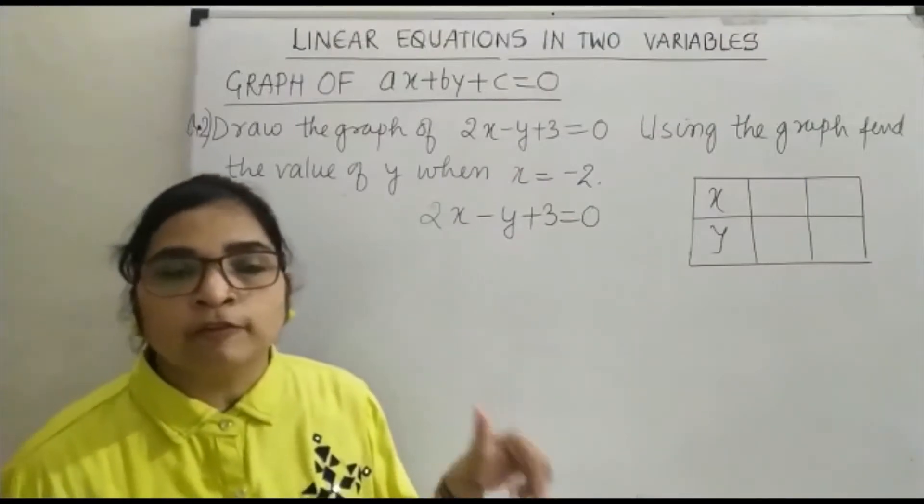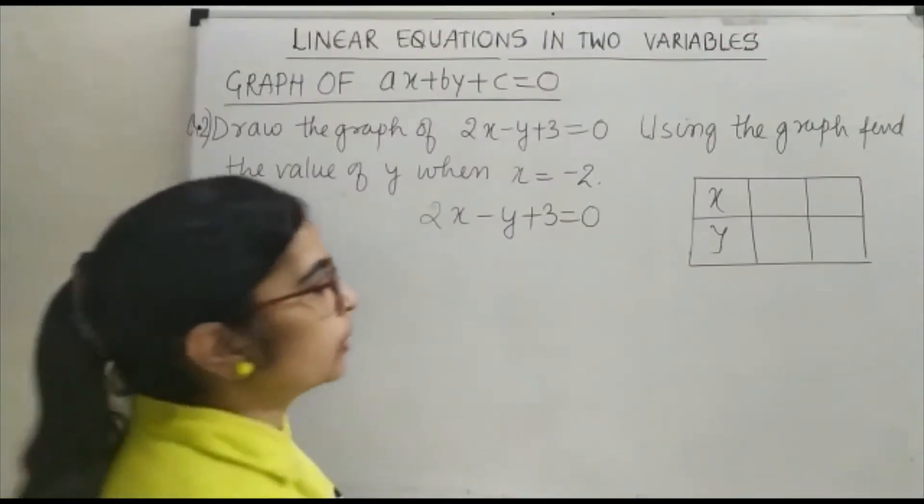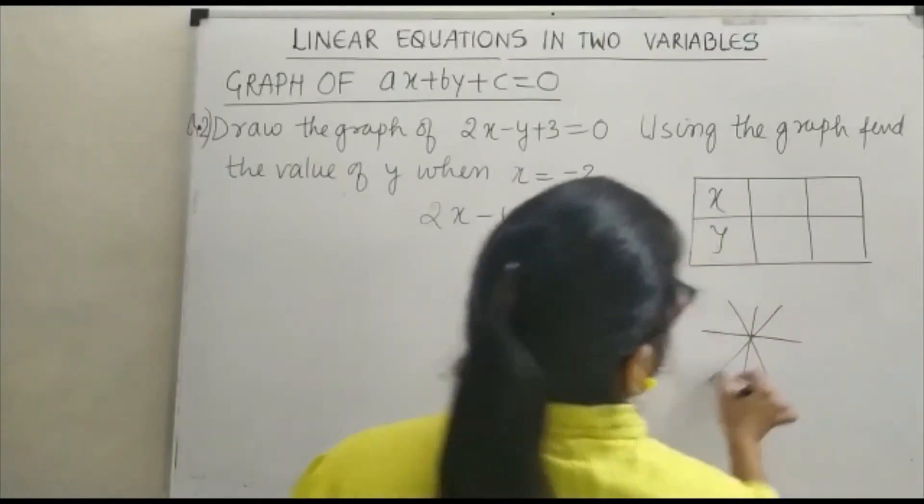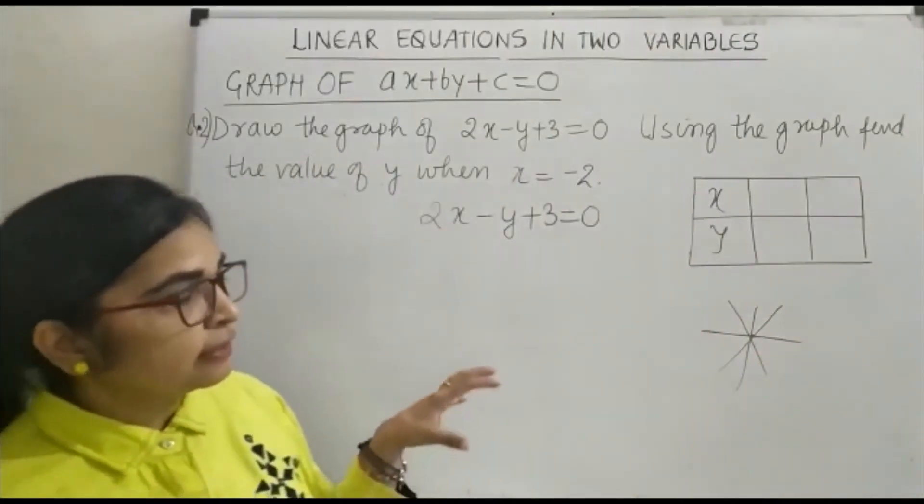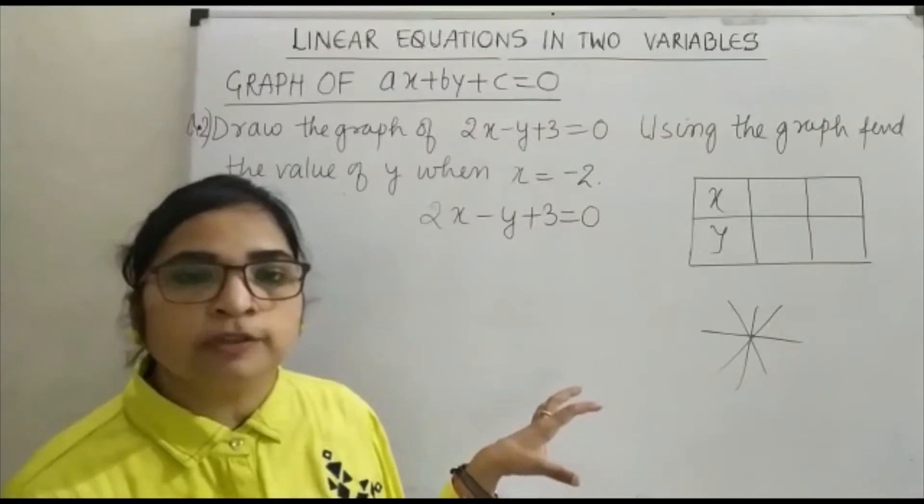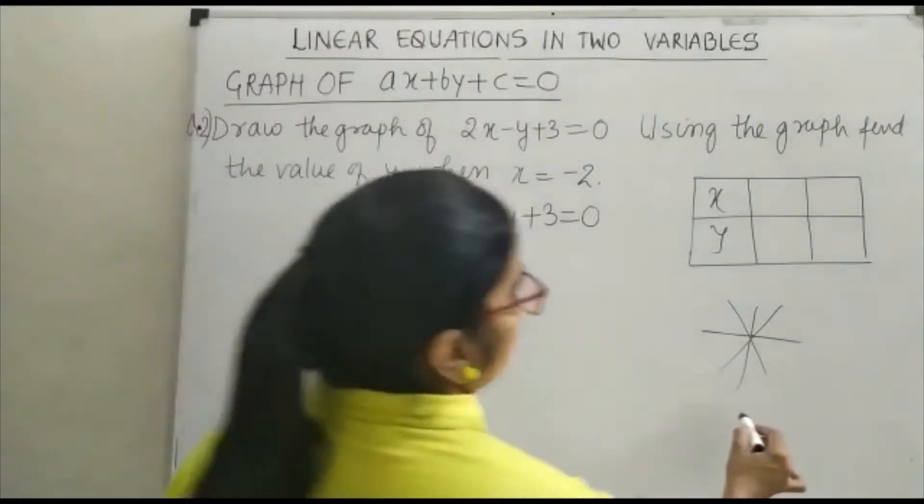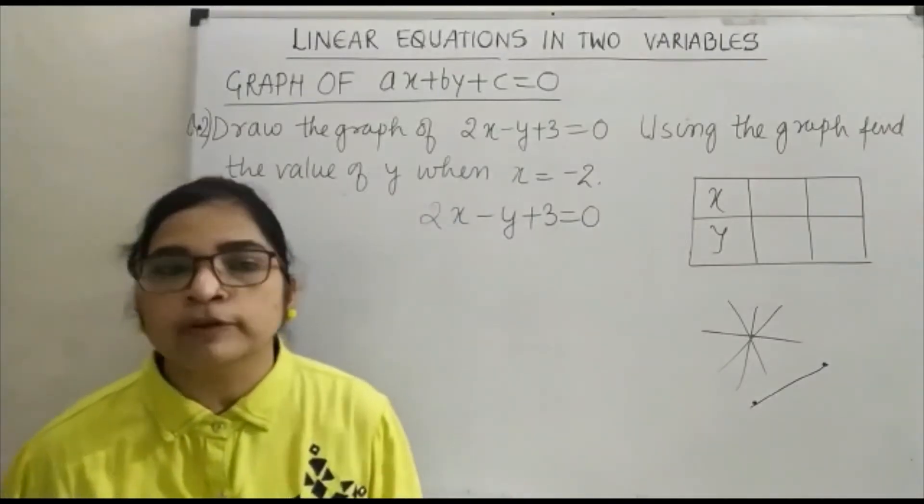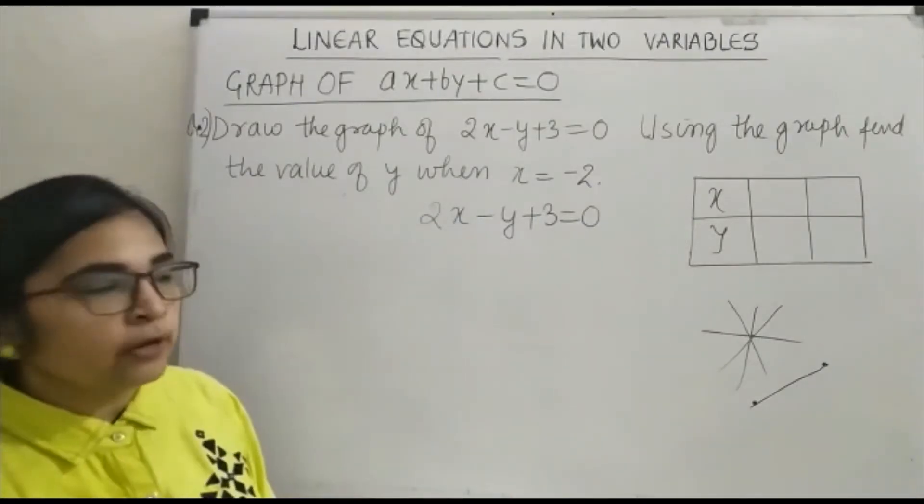With 1 point we will not be able to plot the graph. Because if we have 1 point, then many lines pass through that point. There are infinitely many lines passing through a single point. But if we are having 2 points, then there is only 1 definite line passing through the 2 given points.